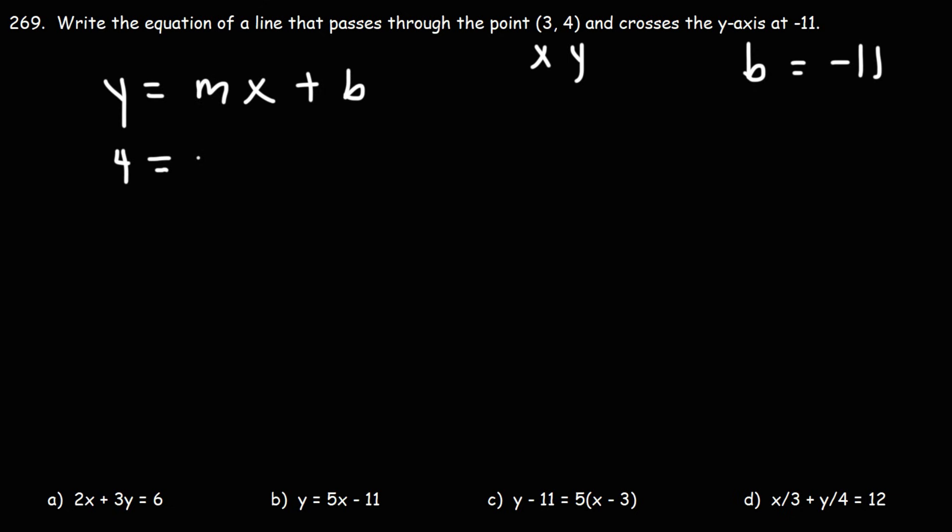Let's replace y with 4, x with 3, and b with negative 11. And we could solve for m. So we have 4 is equal to 3m minus 11.